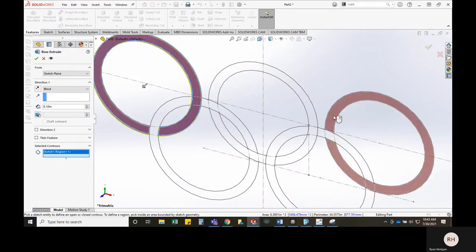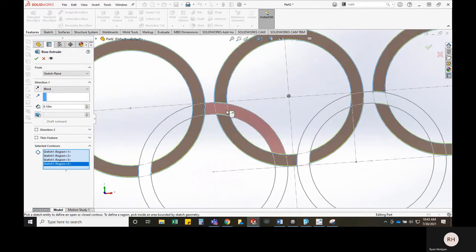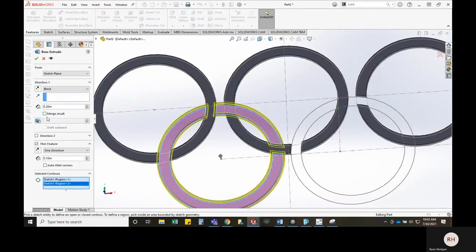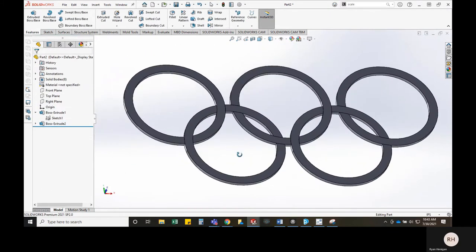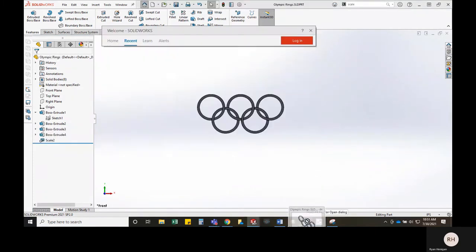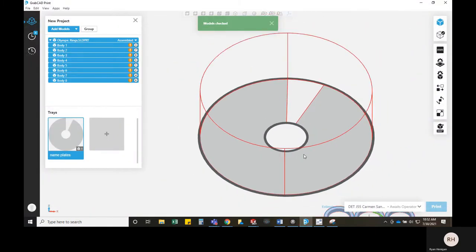Once Ryan creates the rings and creates a 3D model out of this, we're going to grab that data and bring it into GrabCAD. He has the model done here as you can see, and next we're going to grab that SolidWorks file and bring it to GrabCAD.